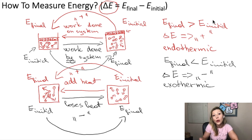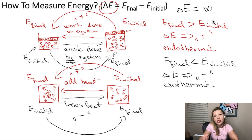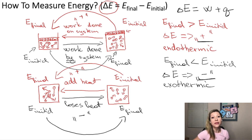Since energy is defined as the ability to do work and transfer heat, there is another way of calculating the change in internal energy. The change in internal energy also equals work, which is defined as W, plus Q, which is heat. I know that there is no letter Q in 'heat,' however Rudolf Clausius defined it in 1850 with this letter, and we just kept it by convention.